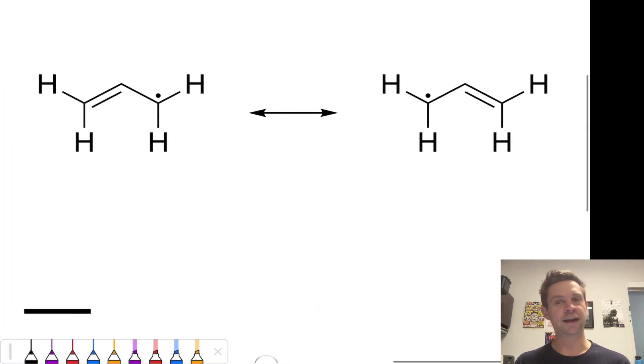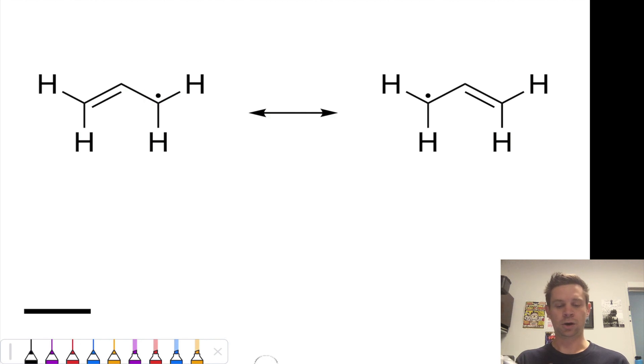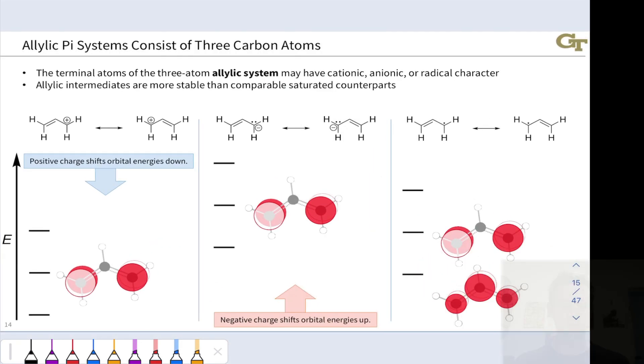For the allyl radical, now we have radical character on one end here, and I can again use resonance, pushing single electrons to show that radical character is shared between the two outer carbons. So allylic systems are relatively stable because of this resonance delocalization of either charge or radical character.